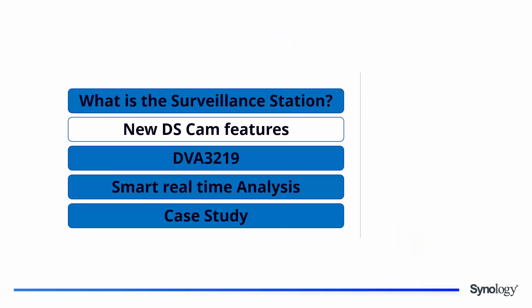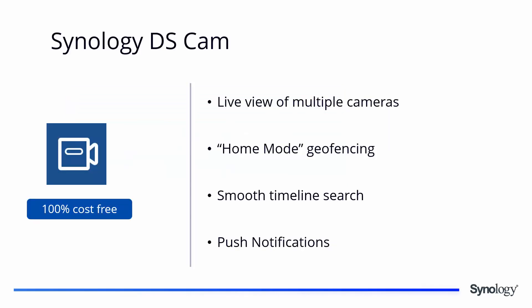The DS-CAM application is 100% free with no hidden costs and comes with a new bundle of upgraded features. You can have a live view of up to six cameras simultaneously. There is also a home mode feature with geofencing — when you leave your house with GPS enabled, Surveillance Station starts automatically, and turns off when you return home.